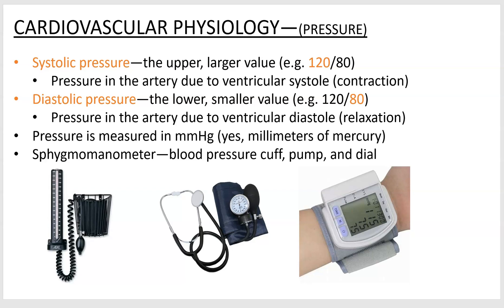There are two main measurements of blood pressure: systolic and diastolic. Systolic pressure is the larger number — the first number, like 120 or 125 — and that's the pressure in the artery during ventricular systole, which means contraction. Diastolic pressure is the smaller number, when the ventricles are relaxed. You don't want blood pressure to be chronically high because that's hard on your heart and blood vessels.